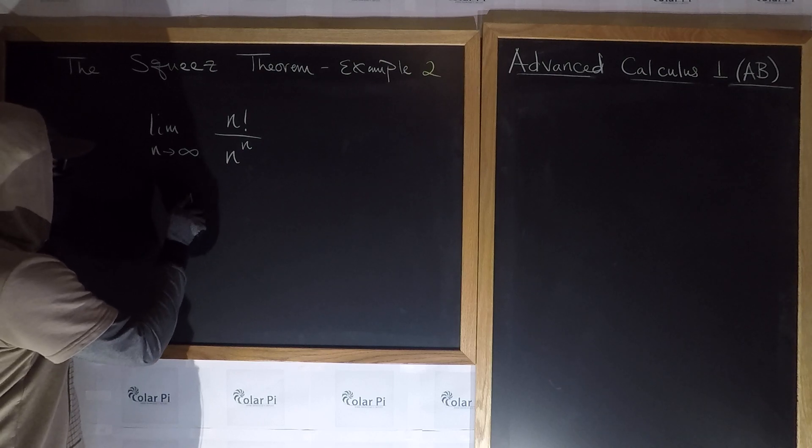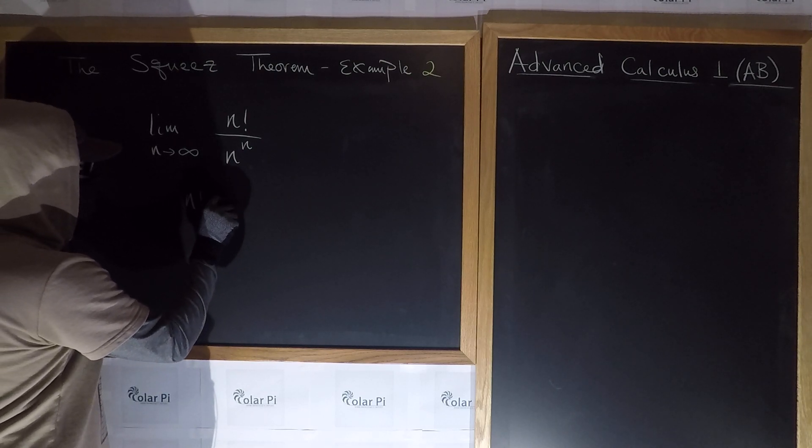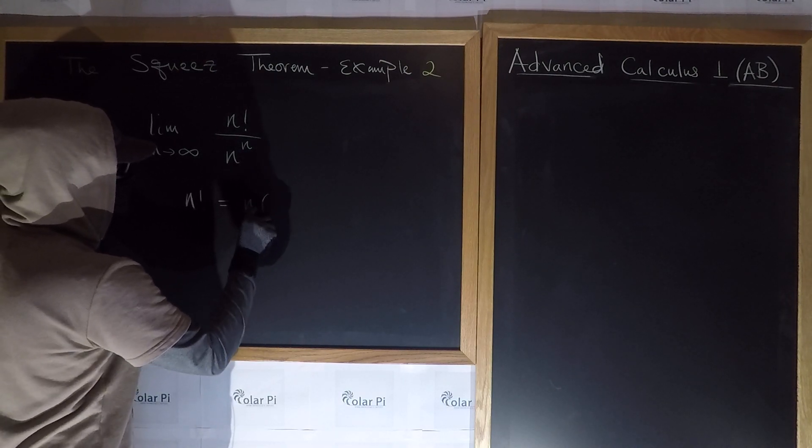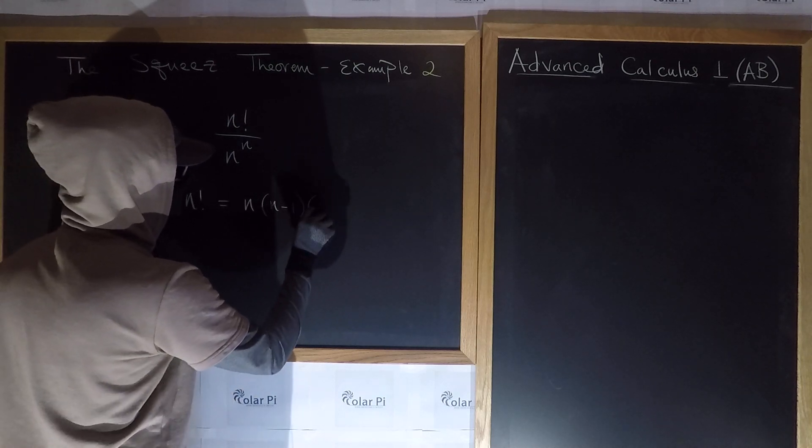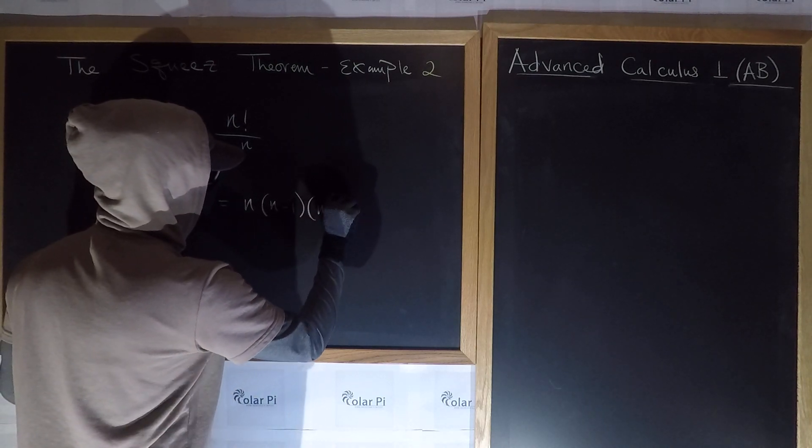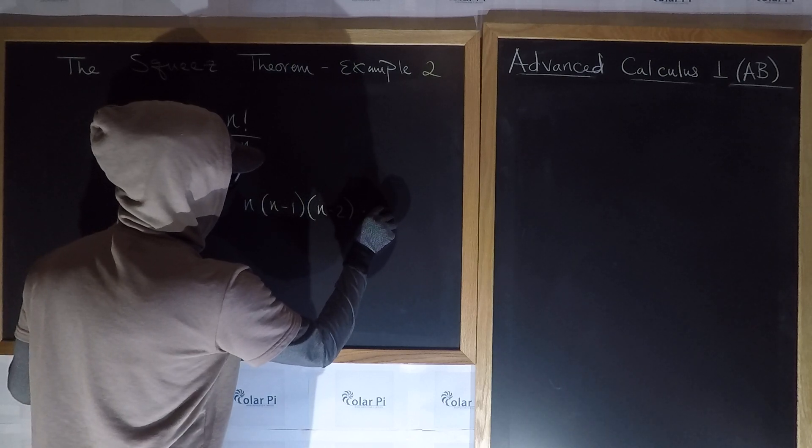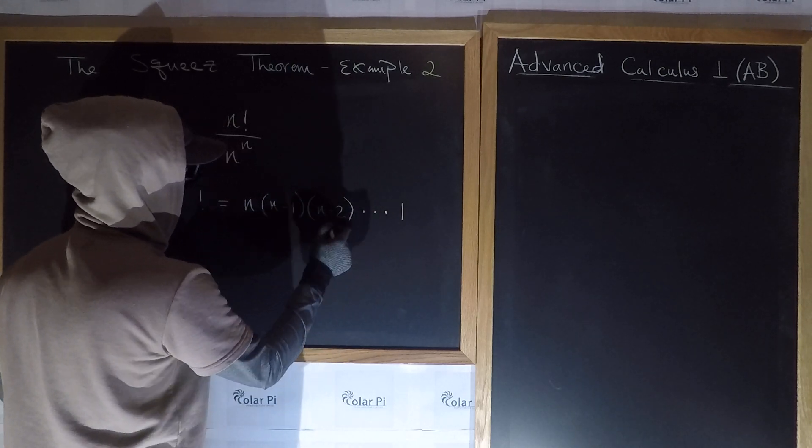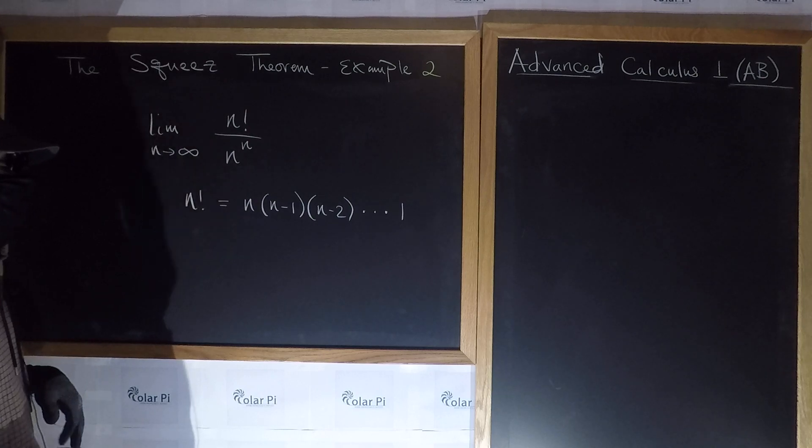You have to think that n factorial is equal to n times n minus 1 times n minus 2, all the way to 1. n minus 3, n minus 4, until you get to 1.